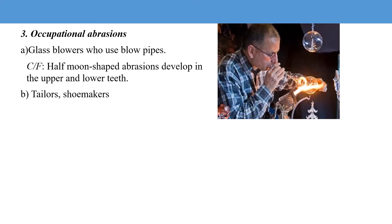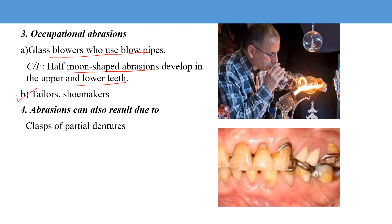Occupational abrasions occur in certain professions — glass blowers who use blow pipes develop half-moon shaped abrasions on upper and lower teeth. Similar abrasions can be seen in tailors and shoemakers. Abrasion can also result from clasps of a partial denture, where the constant presence of the clasp leads to abrasion in that area.